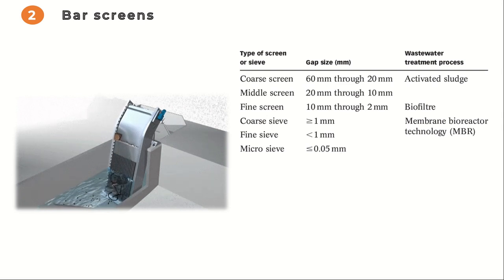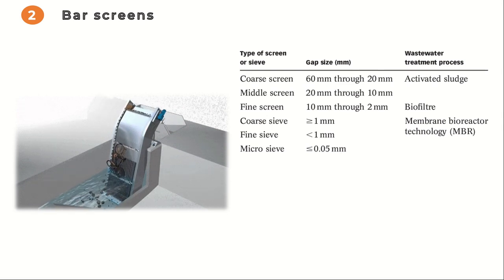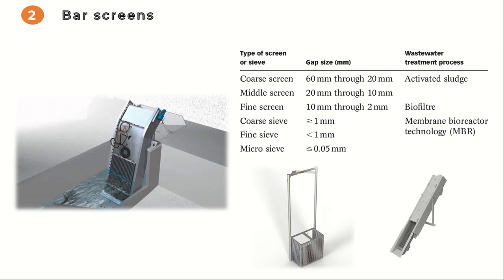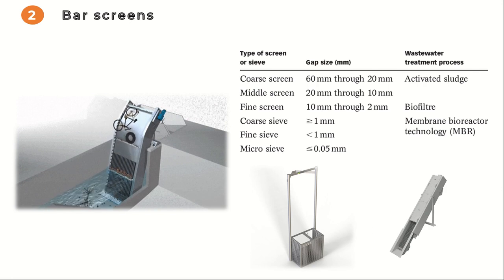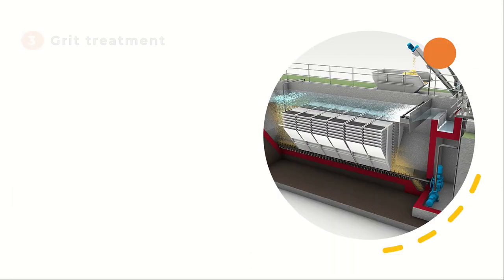The choice of screen category depends on the types of water, sludge, and treatment selected. Each category includes various types of screening methods. The classification of screens is determined by the size of the screening openings and other mechanical characteristics, such as whether they are automatically or manually cleaned.